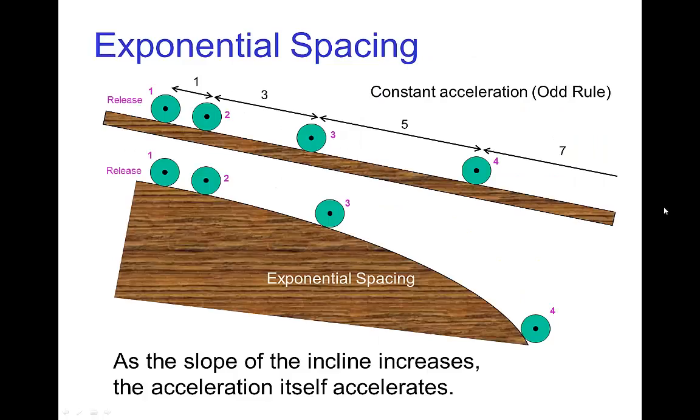One way to understand what's occurring here is that the odd rule applies not just to something falling straight down, but also a ball rolling down a slope. The odd rule says that if we start from the apex and release the ball, as it rolls down the first spacing is the distance between the first key frame and the next key frame.